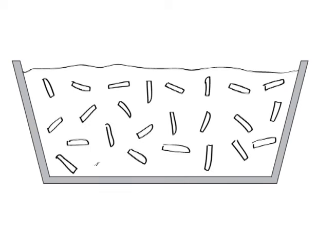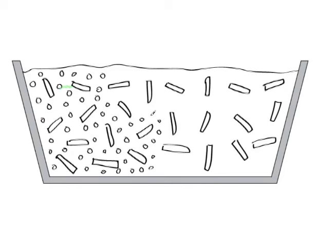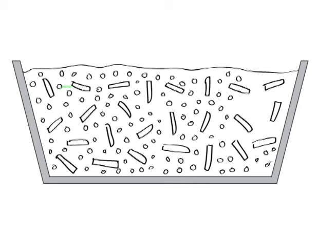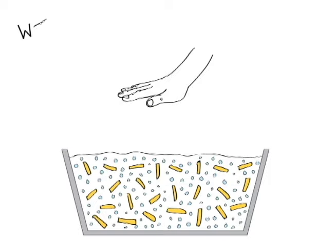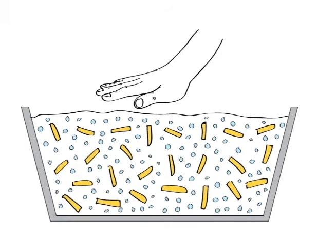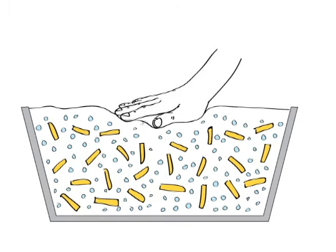Each cornstarch molecule is surrounded by water molecules. As you can see, the water molecules are a lot smaller than the cornstarch molecules. In the event of a weak force, only a little bit of force is applied by pressing on the cornstarch with a hand. The cornstarch molecules are able to slide past each other because the water in between them acts as little balls that they can roll over.